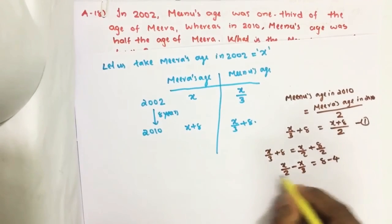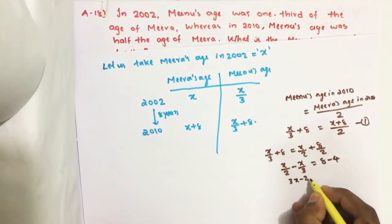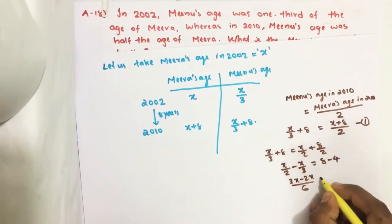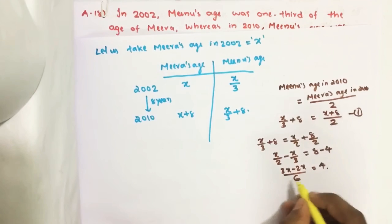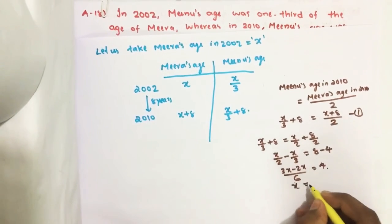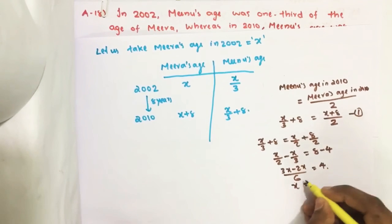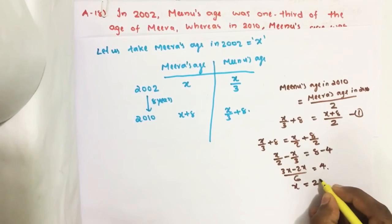Cross multiply: 3X minus 2X divided by 6 equals 4. From this, 3X minus 2X equals X. Multiply by 4: we get 6 into 4.